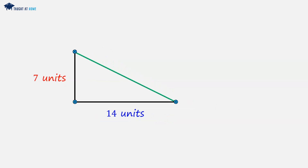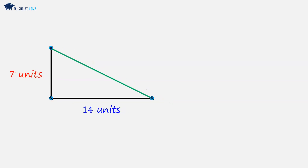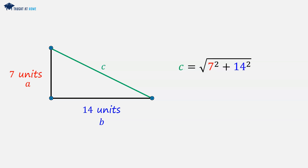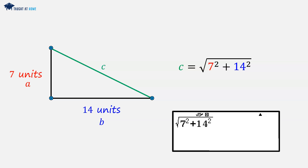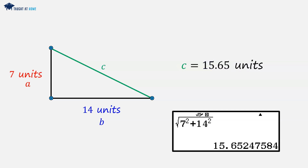And now we have our triangle, and we can add our a, our b and our c label. Because now we can substitute these into Pythagoras' theorem. So a is 7 squared, b will be 14 squared. I would put this straight into a calculator: the square root of 7 squared plus 14 squared. Hit equals and we get 15.65247. We can round this to two decimal places as being 15.65 units.